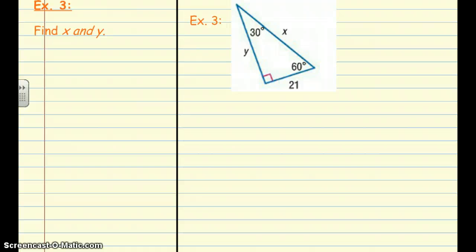On to example number 3. Here's our example with the 30-60-90 triangle, and we're going to use the properties of this to find both x and y. Looking back at what that property says, we know the hypotenuse is equal to 2 times whatever s or the short leg is.